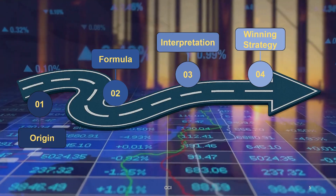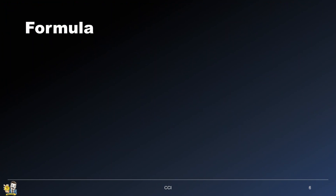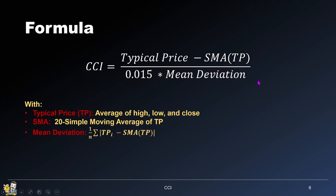About the formula — I'll keep it simple. CCI equals this. Where typical price is the average of high, low, and close. SMA is the 20-period simple moving average of that typical price. And the mean deviation equals this equation. It's very simple.